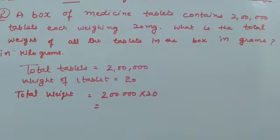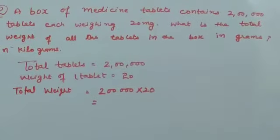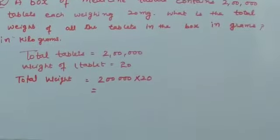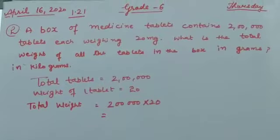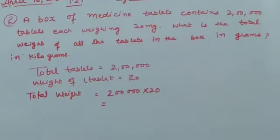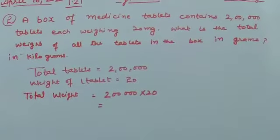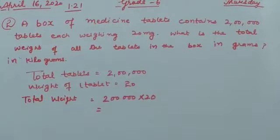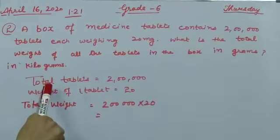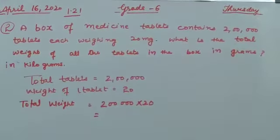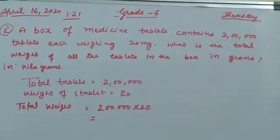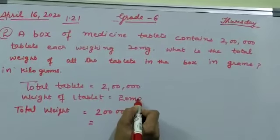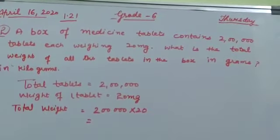First, we need to find the total weight. The weight is given in mg. If you take any tablet, it will say 20 mg, 50 mg, or 500 mg. The weight is written on tablets. So coming to the question, first we have total tablets: two lakhs. Weight of one tablet is 20 mg.